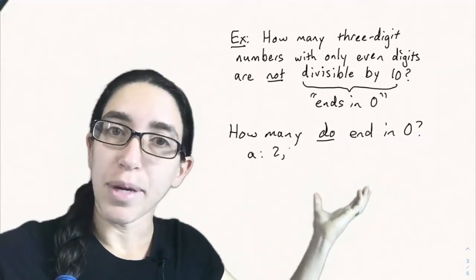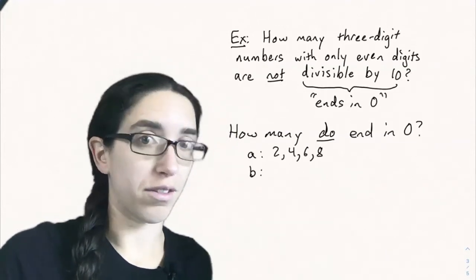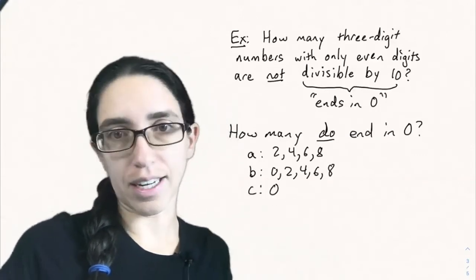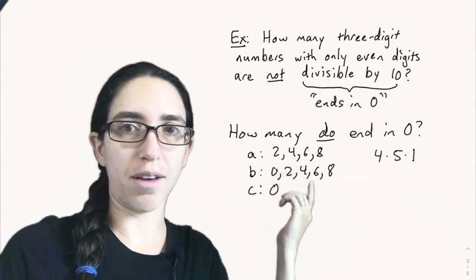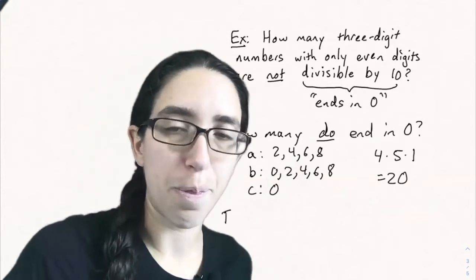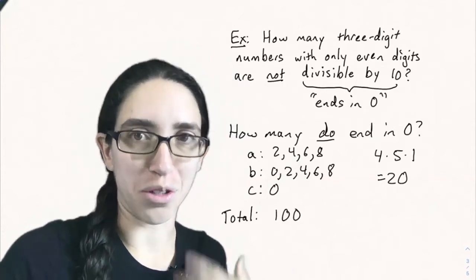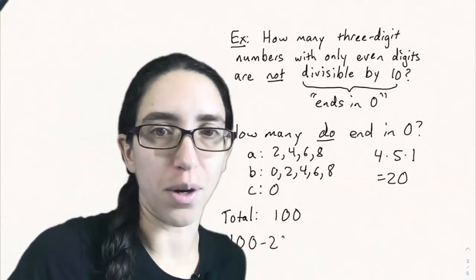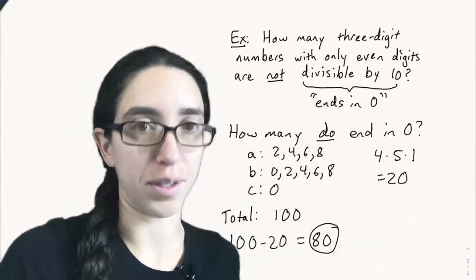Let's look at again ABC as our three digits. Well, A can be 2, 4, 6, or 8. B can be 0, 2, 4, 6, or 8. And then if we're mandating that it ends in 0, then C can only be 0. And so we have four possibilities for A, 5 for B, and only one for C. So we only have 20 possibilities that do end in 0. And now remember that we already found out the total is 100, the total number of three-digit numbers with only even digits, and we're subtracting off the ones that end in 0. And we get 100 minus 20, 80 remaining, are not divisible by 10.